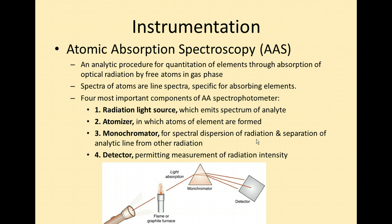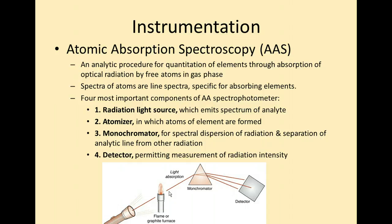The other method is atomic absorption spectroscopy, also used for quantitating these elements. The key difference from atomic emission is that a light shines through the flame. The light source emits a spectrum of the analyte, an atomizer provides the flame, and the light then passes through a monochromator with a detector on the other side. The two types of instrumentation you need to know for trace elements are atomic emission spectroscopy and atomic absorption spectroscopy.